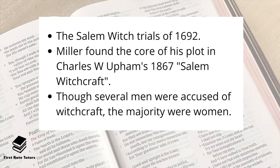Miller's interest in the Salem witch trials was prompted by reading Marion Starkey's The Devils in Massachusetts in 1949, which suggested that attitudes towards race and nationality during the Second World War made the Salem witch trials an allegory for that period — in other words, a representation of that period. While Miller saw additional parallels with the 1950s, he researched the original trials by visiting the historical society in Salem, Massachusetts, where he found the core of his plot in Charles W. Upham's 1867 Salem Witchcraft, in which all of the play's characters are referred to and many of its events are related. He also read the original court transcripts of these trials.